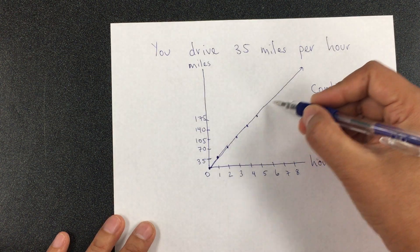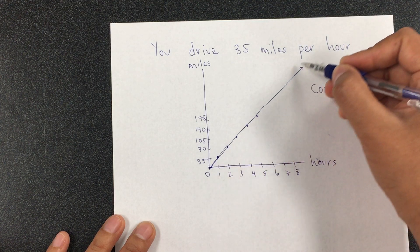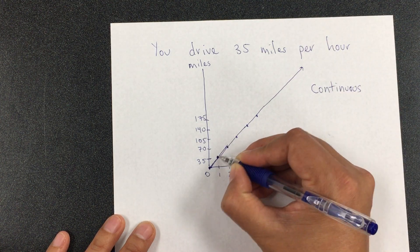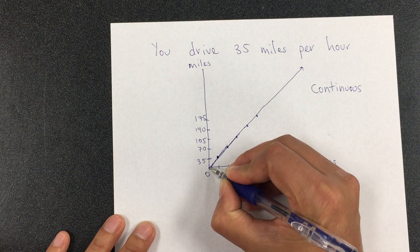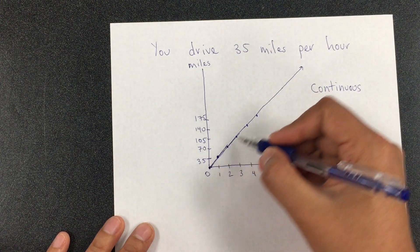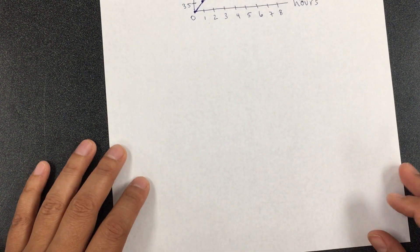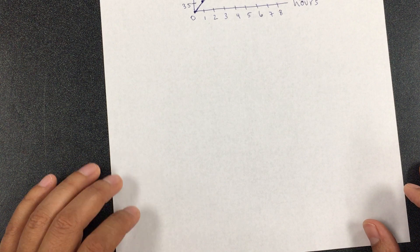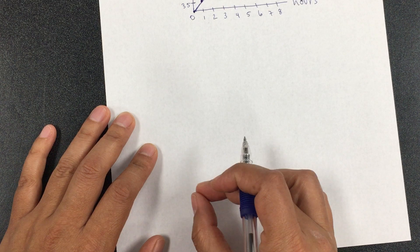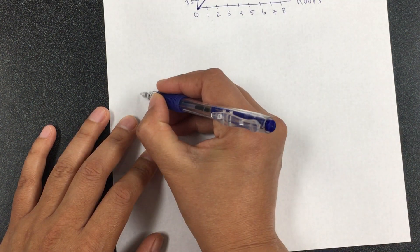You draw the line because you're driving constantly. You're not stopping or appearing from here and all of a sudden you're here. It's continuous. The next graph that we're going to do is the discrete graph. What that means is you're not going to have the line. And I'll explain why.